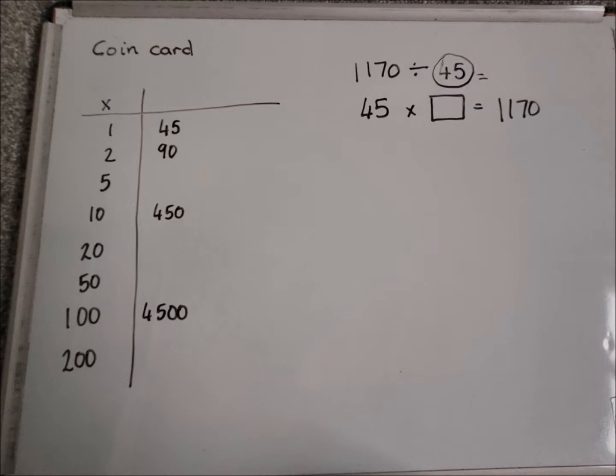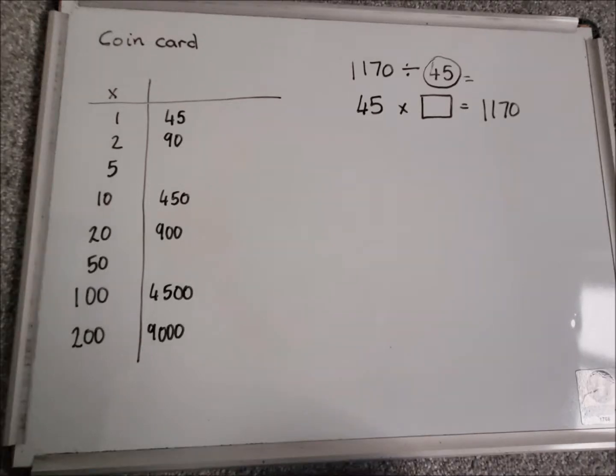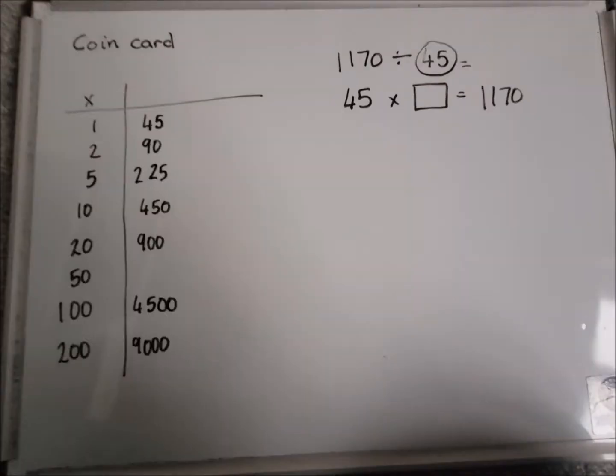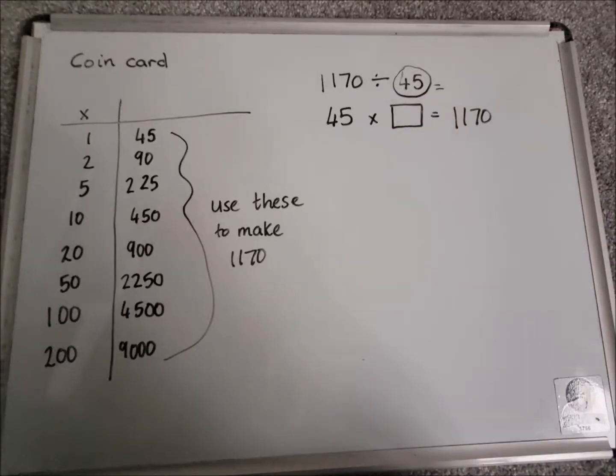Times it by 100 gives me 4500. To find the 2, we double the 1, which is 90. To find 20, we times the 2 by 10, which is 900. To find the 200, we times by 100, so it's 9000. To find the 5, we halve the 10, so that's 225. And to find the 50, we times the 5 by 10, which is 2250. If you don't understand that, like I said, go back and watch the video on the coin card first, and then come back to this lesson.